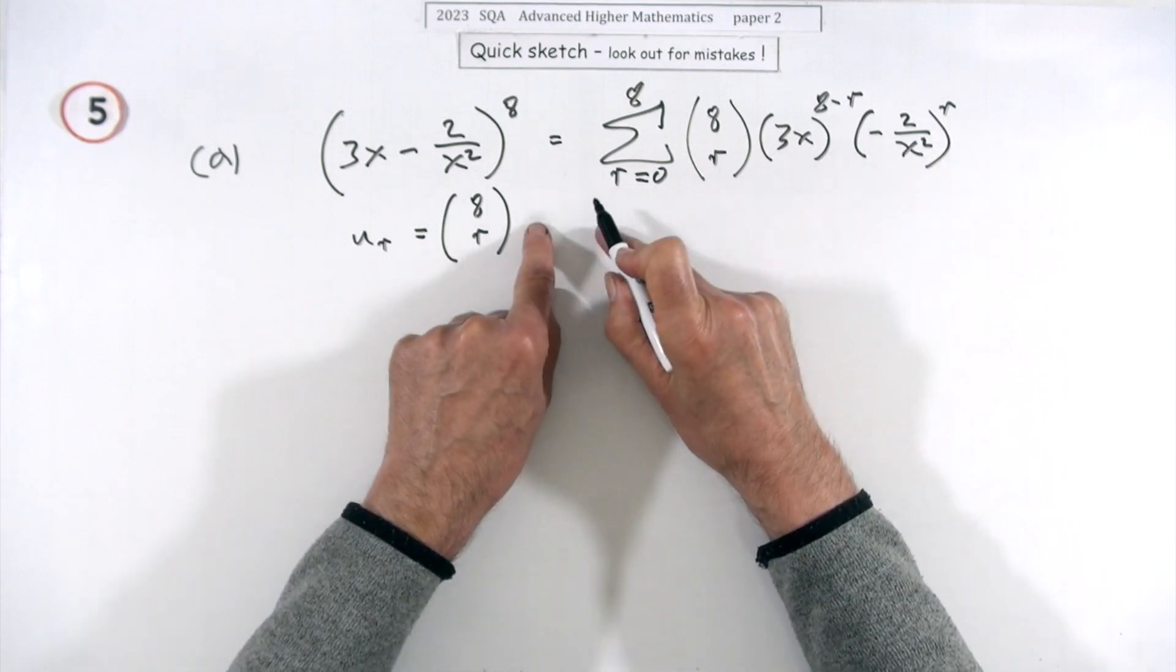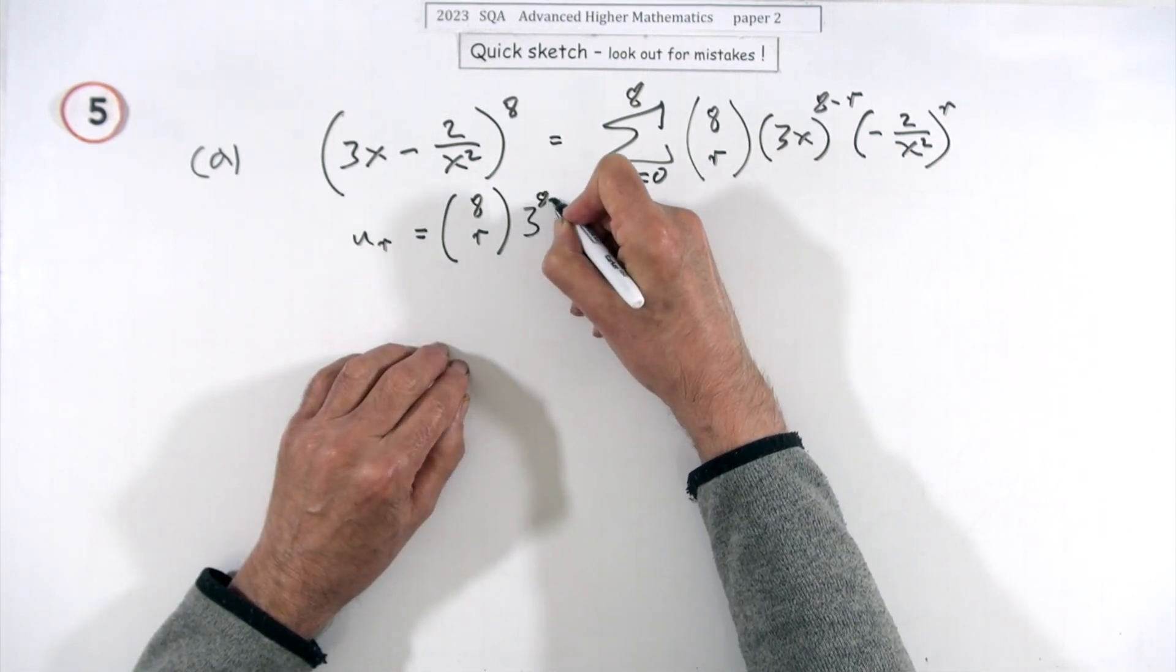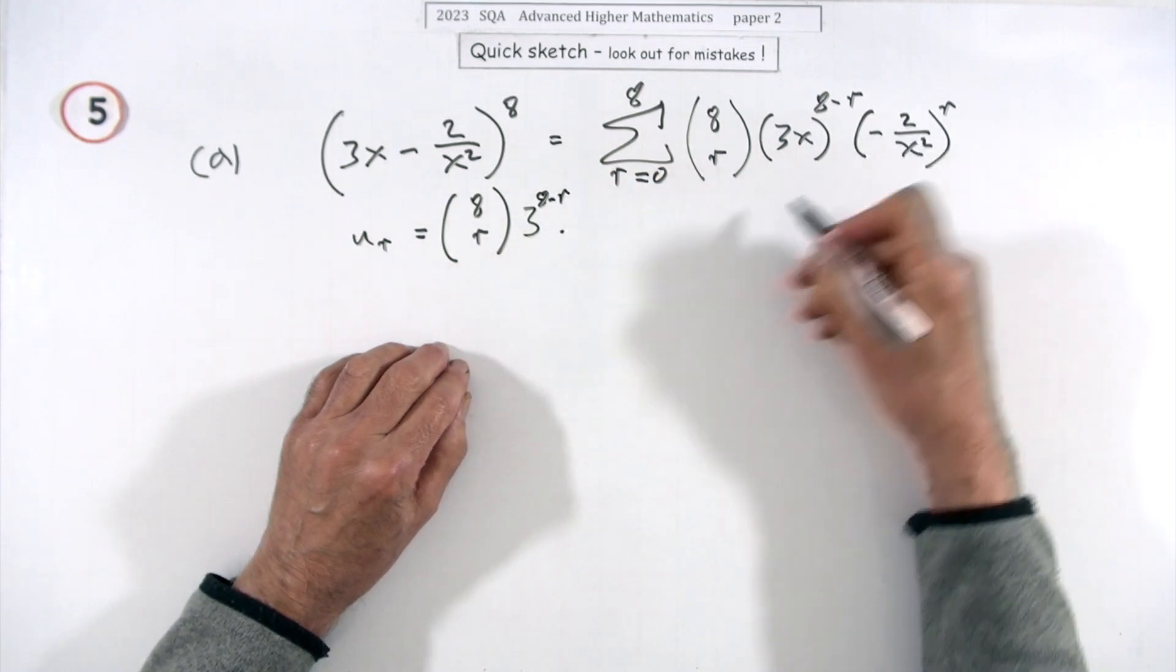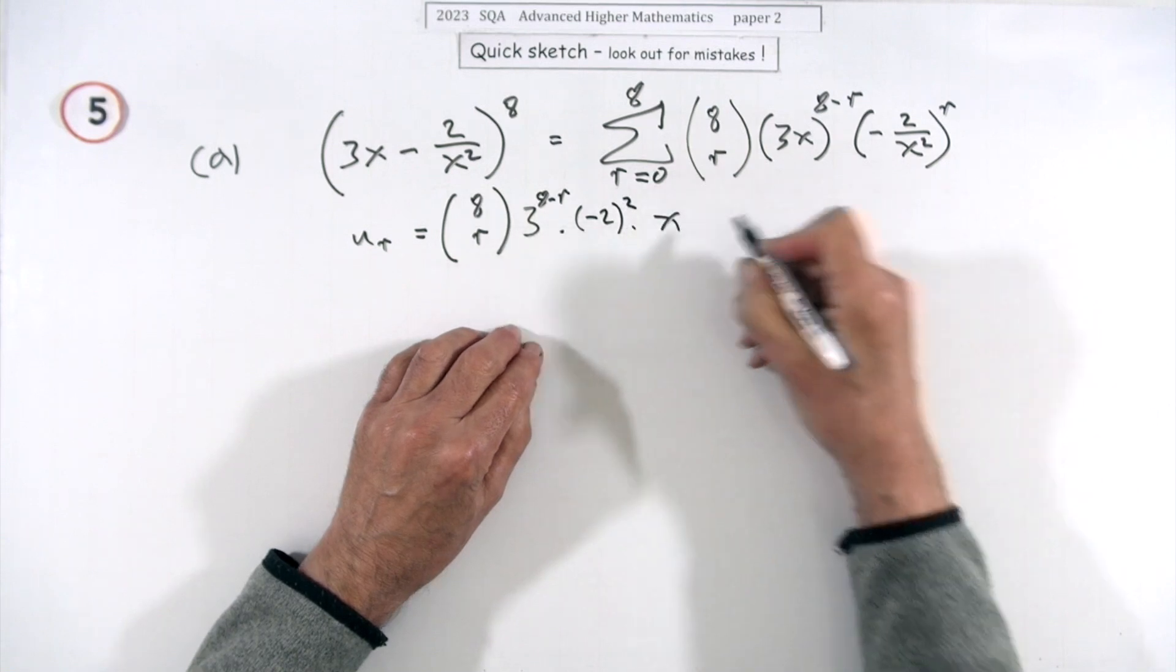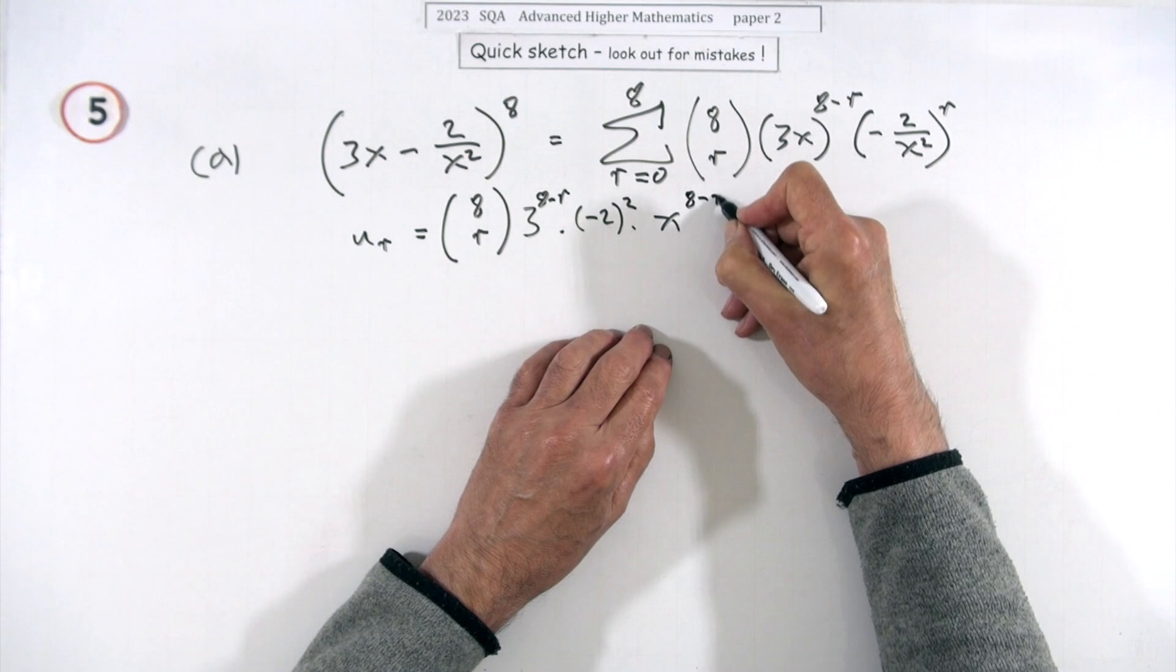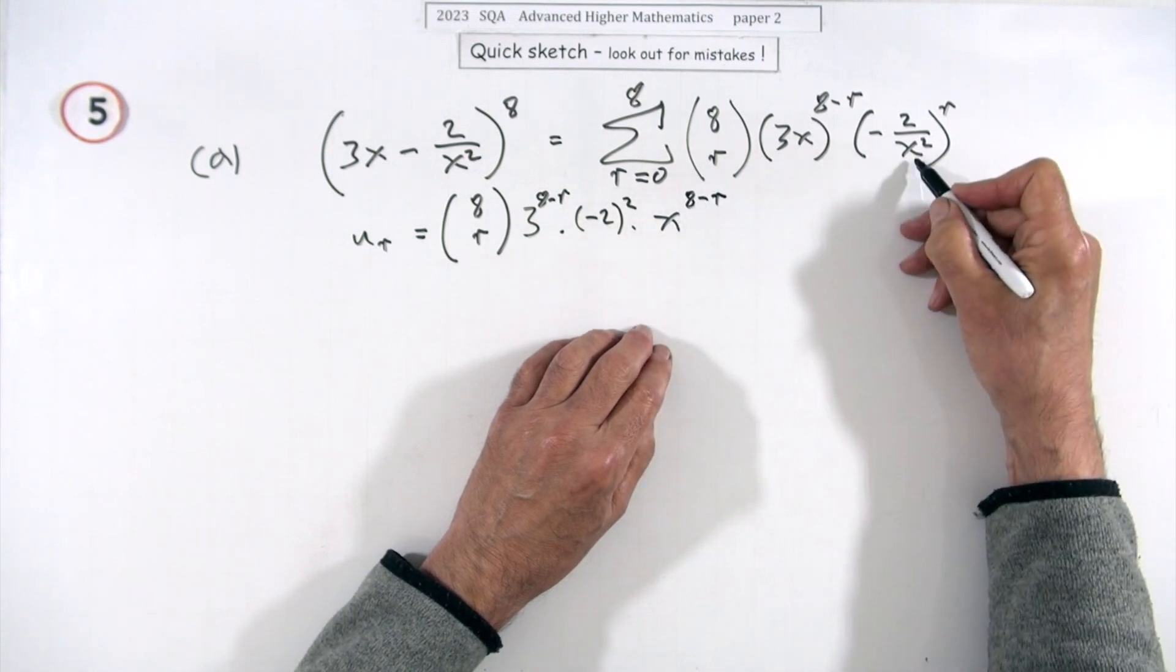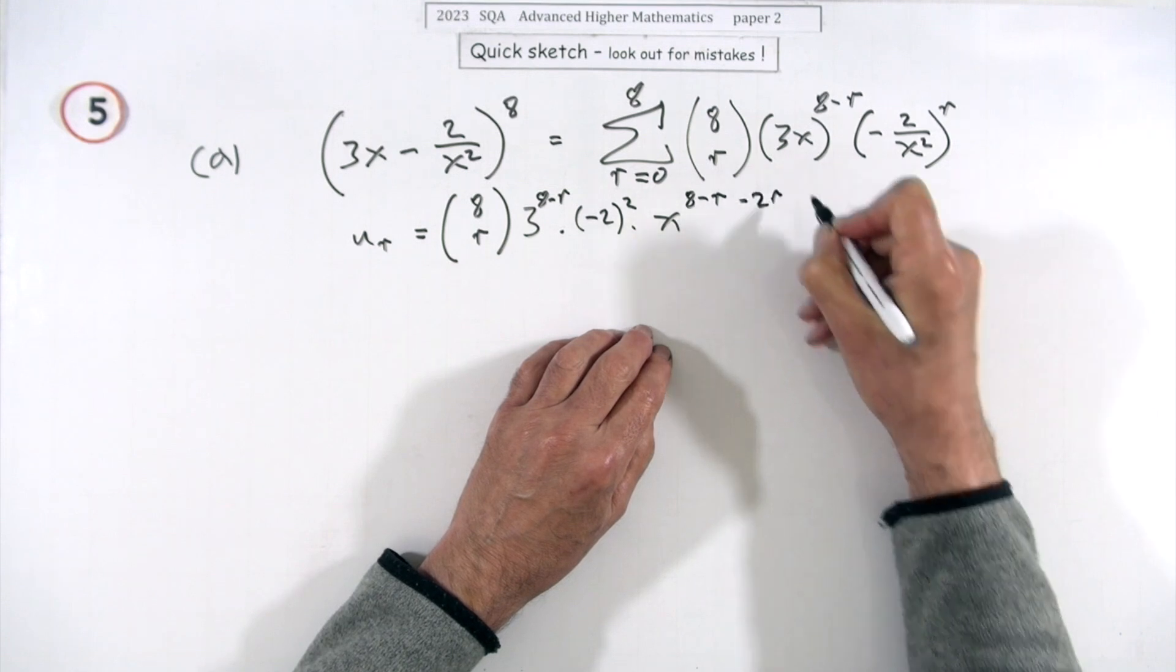And then we'll have to pick out the coefficients first because that's part of the coefficient. So there's a three in it, there's a three to the power eight minus r, there's a negative two to the power r. And then there's all the x's. There's an x to the power eight minus r multiplied by, that's a negative two, so that'll be minus two lots of r.